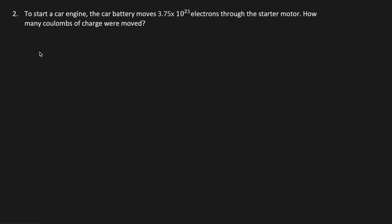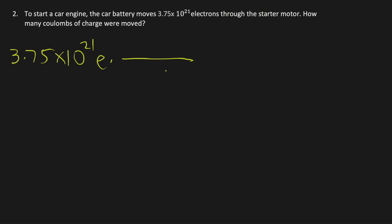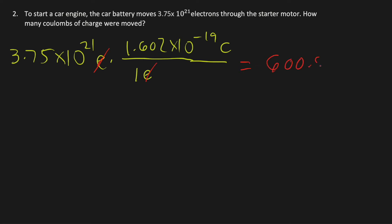To start a car engine, the car battery moves 3.75 times 10 to the 21st power electrons through the starter motor. How many coulombs of charge were removed? You need to convert the number of electrons to coulombs. So 3.75 times 10 to the 21st electrons times 1.602 times 10 to the negative 19th power coulombs per electron. The units cancel out, giving a result of 600.8 coulombs.